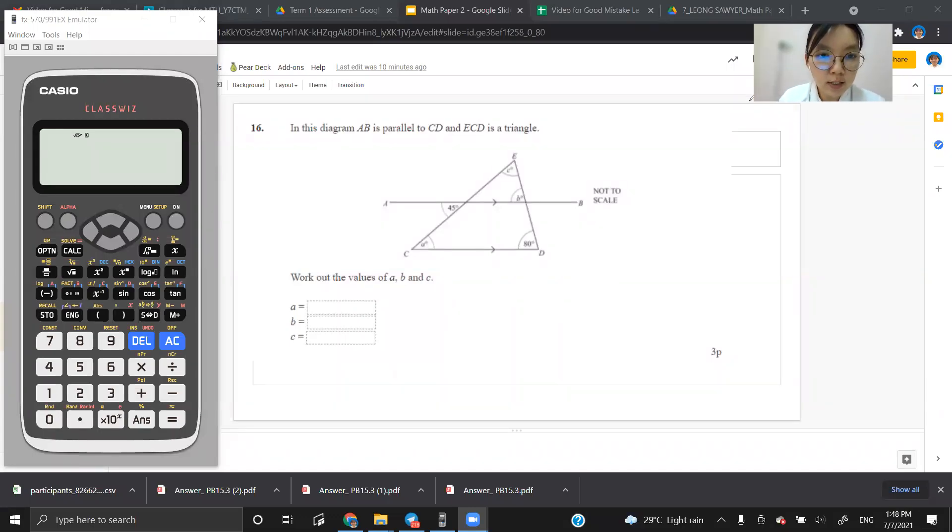Hey, this is question 16. In this diagram, AB is parallel to CD. Get a key point: AB is parallel to CD.